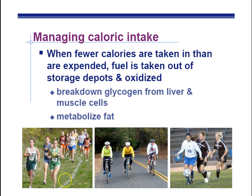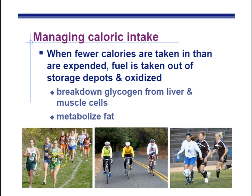Managing caloric intake. When fewer calories are taken in than expended, the fuel is taken out of storage and oxidized. As you need more energy, you break down the glycogen from your liver and muscle cells to provide sugar in your bloodstream, which provides the raw materials for cell respiration in order to make ATP. So as you're running, you're going to need to make more ATP to twitch those muscles.